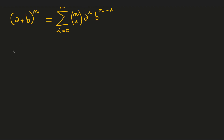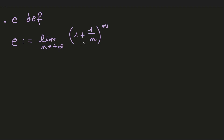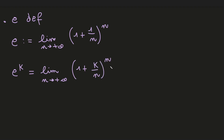We need a definition of e. One of its definitions is that e is defined as the limit as n approaches infinity of 1 plus 1 divided by n, all to the power of n. A consequence of this limit is that e to the power of k equals the limit as n tends to infinity of 1 plus k divided by n, to the power of n — you just switch indexes, changing k with another variable.